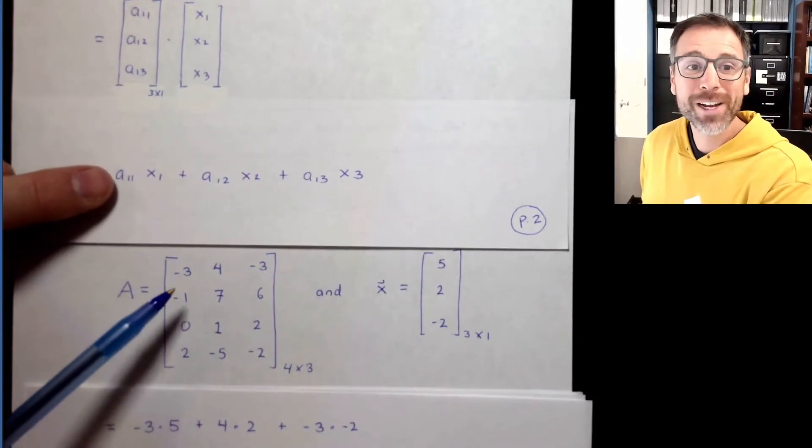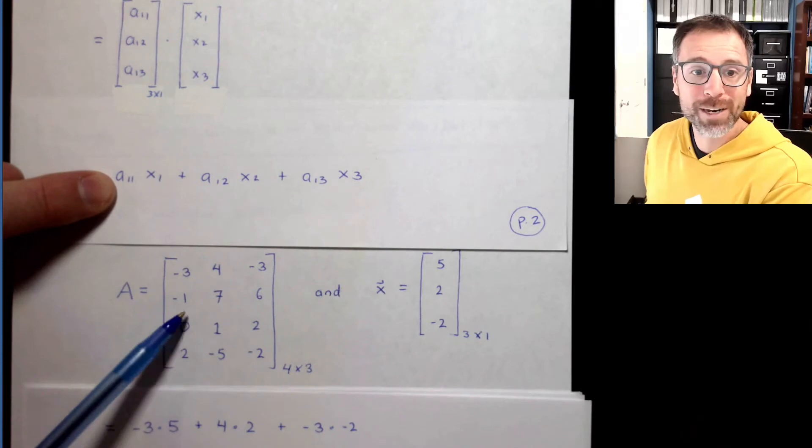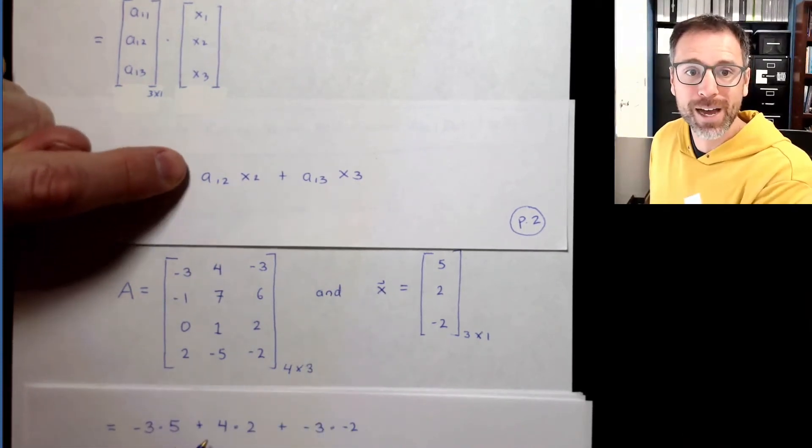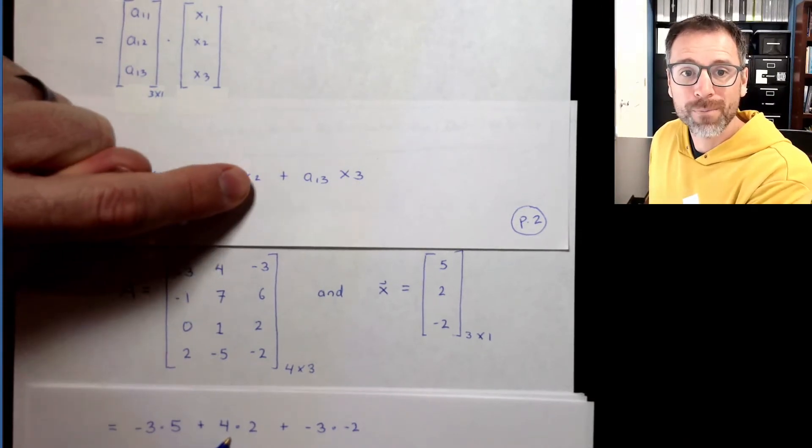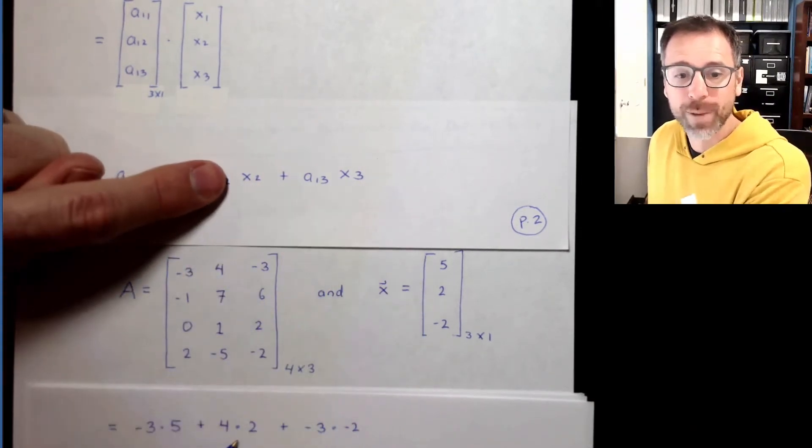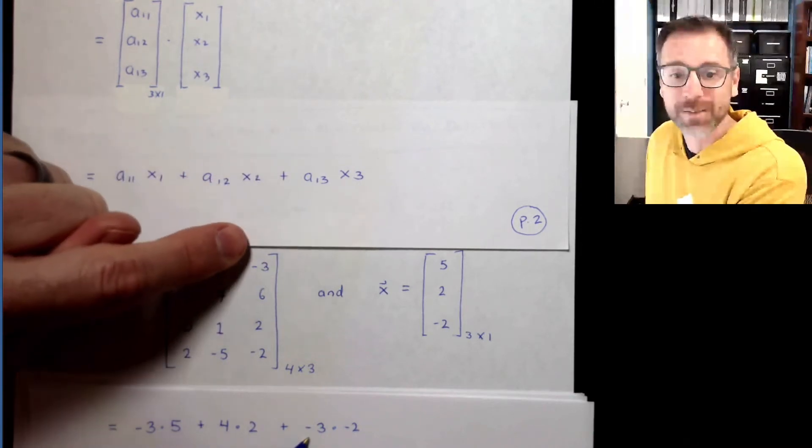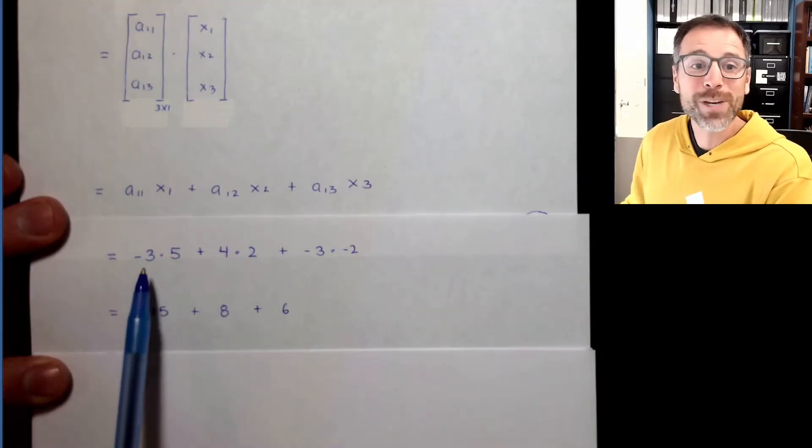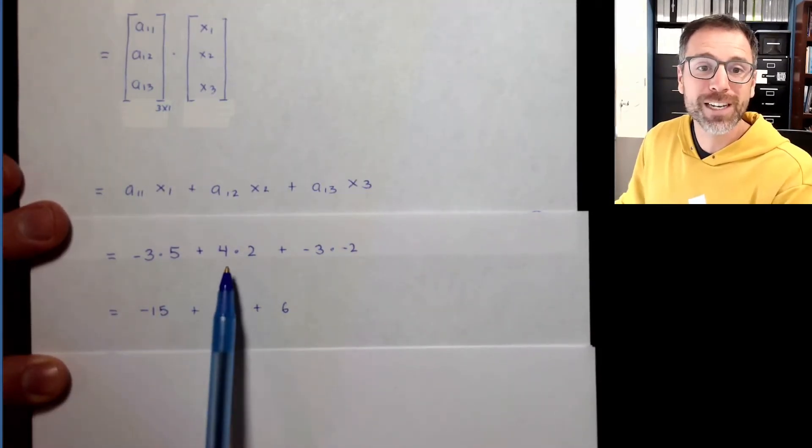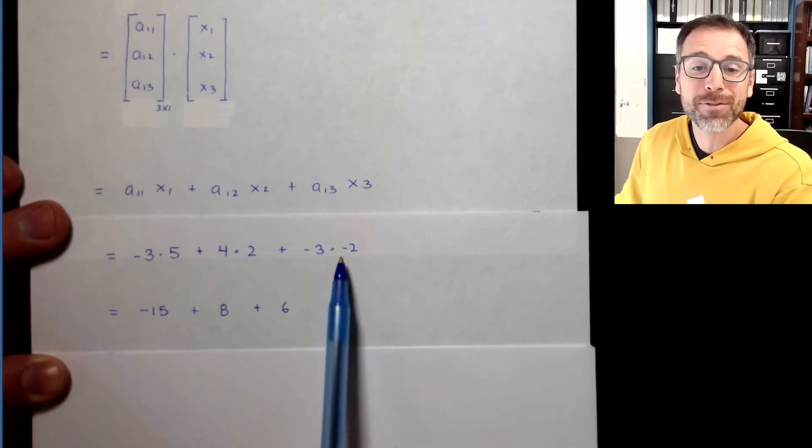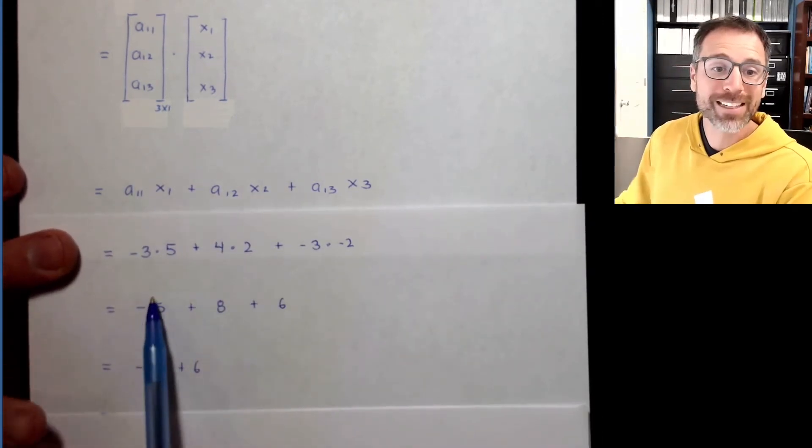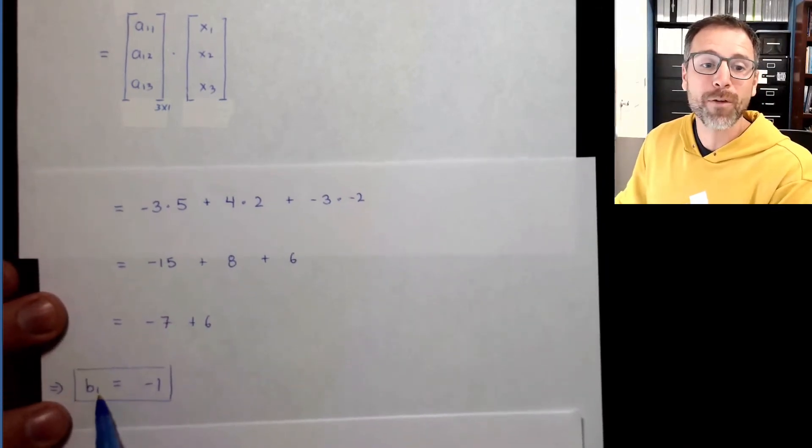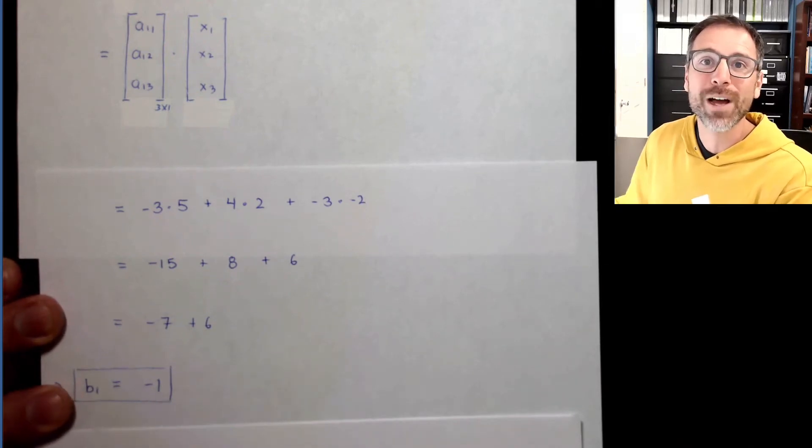If we do a quick recall of what A and X were, A_11 is negative 3, X_1 is 5, so this is negative 3 times 5, plus A_12 is 4, X_2 is 2, and then A_13 is negative 3, X_3 is negative 2. We can do each output individually: negative 3 times 5 is negative 15, 4 times 2 is 8, negative 3 times negative 2 is 6. Negative 15 plus 8 is negative 7, 6 plus negative 7 is negative 1, so we know that the first entry of our output vector B is negative 1.